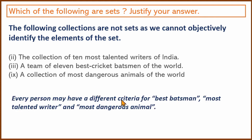Each person may have different criteria for best batsman, most talented writer, and most dangerous animal. Therefore we cannot use these criteria to objectively identify the elements of the set — that is why these collections are not sets. This concludes the first question.